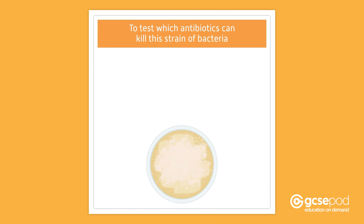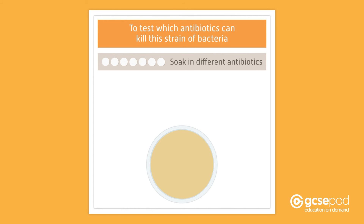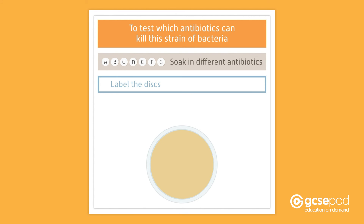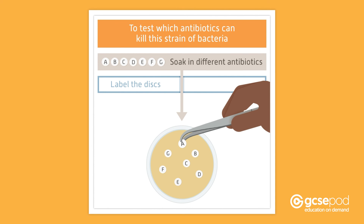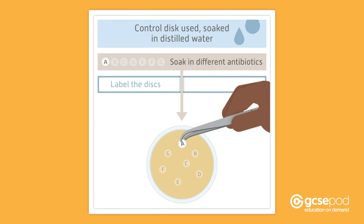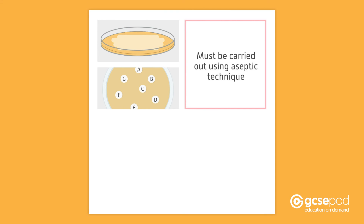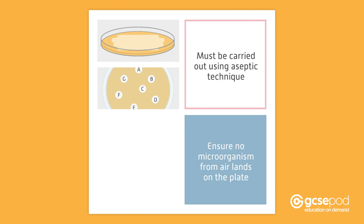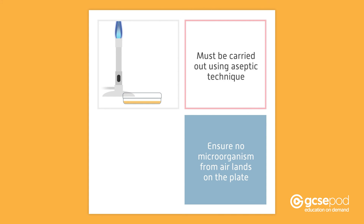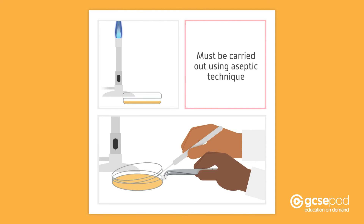To test which antibiotics can kill this strain of bacteria, you soak small discs of filter paper in different antibiotics. Make sure you label the discs so that you know which antibiotic is on which. The discs are placed on the surface of the agar using forceps. Sometimes a control disc is used, which has been soaked in distilled water. Making the bacterial lawn and placing the discs onto the plate must be carried out using an aseptic technique to ensure that no microorganisms from the air land on the plate.